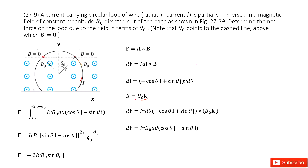The direction of L changes all the time along the arc, so how can we determine its direction? We have a way: we can cut this wire into infinitely many small samples. Each small section we can consider as DL.